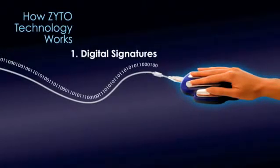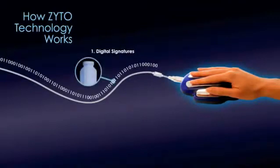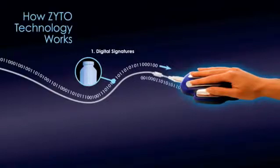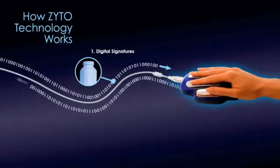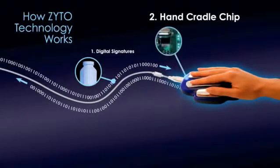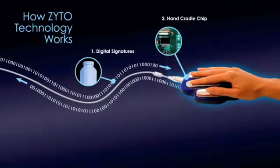Computer generated digital signatures representing physical stimuli are sent to the body. These digital stimuli elicit physiological responses from the body, one of which is a change in the conductivity of the skin called GSR. These fluctuations in skin conductivity are measured and sent back to the computer for analysis and interpretation. The hand cradle chip takes conductivity readings from the skin and converts the analog readings to a digital form, which is sent to the computer for analysis.